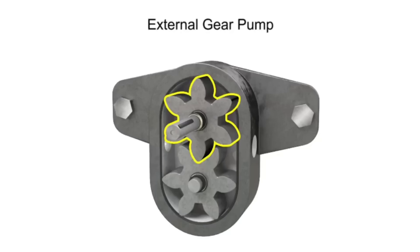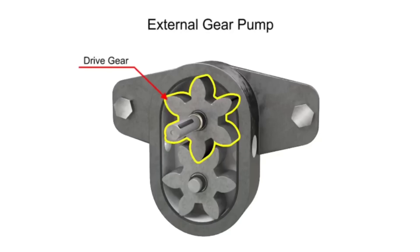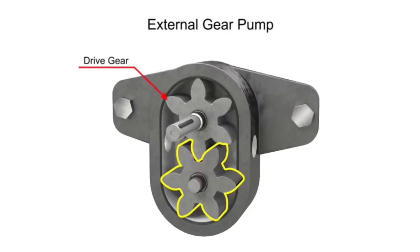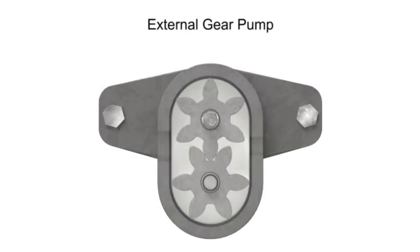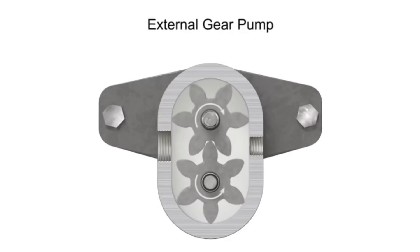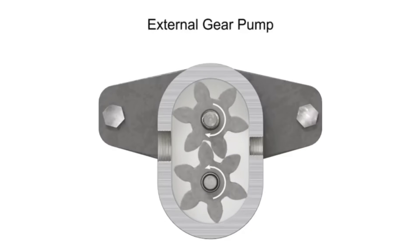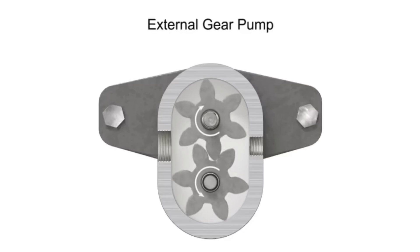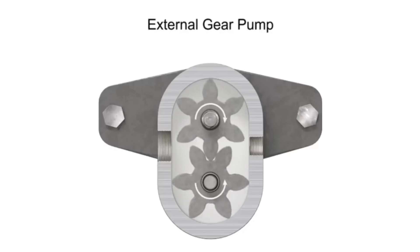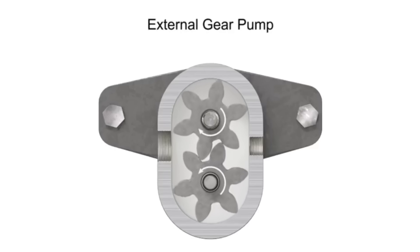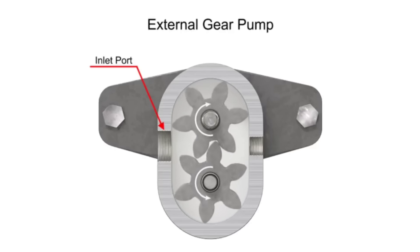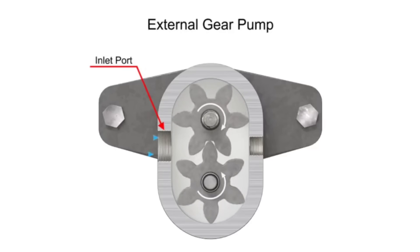One gear is driven by a motor connected to a shaft. This is called the drive gear because it is driven by a motor, and it in turn meshes with and drives the movement of the second gear. As the gears rotate away from each other and come out of mesh, they create an expanding volume on the inlet side of the pump, creating a vacuum at the inlet port that allows fluid to flow in.